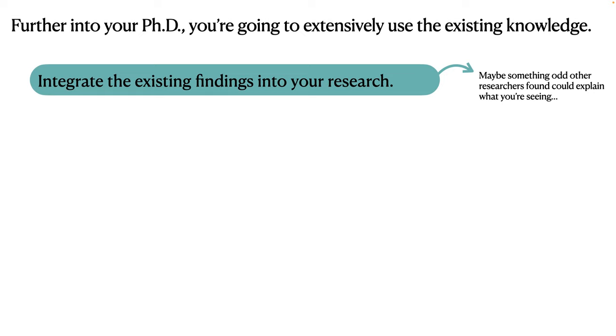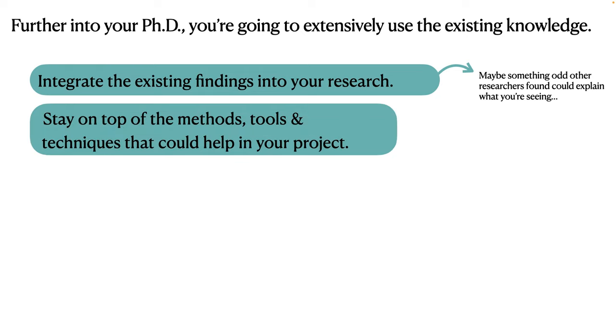So for example, there might be something odd that other researchers found and described in their work. And it could also explain what you are currently seeing in your work. And you can then formulate a hypothesis that a phenomenon from earlier publication by other authors plays a role in X, Y, and Z. You also want to stay on top of the most important methods, tools, techniques that could help in your project. And using techniques and tools that others have developed saves you a lot of time. So this might, for example, be a piece of software that others have developed that solves a particular research problem that you're facing. So why not using it? By using the literature,